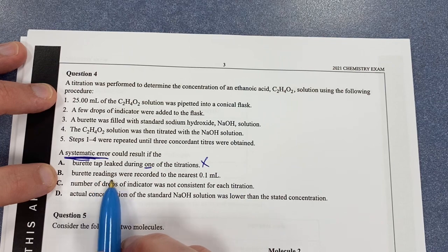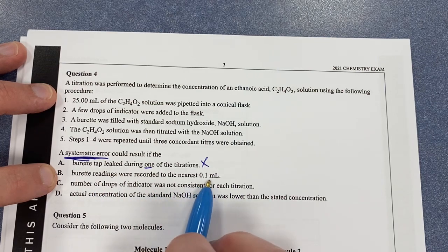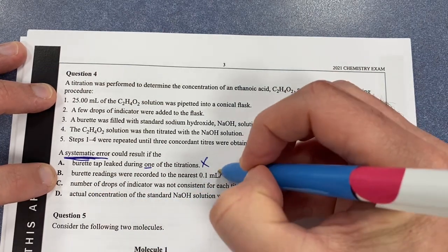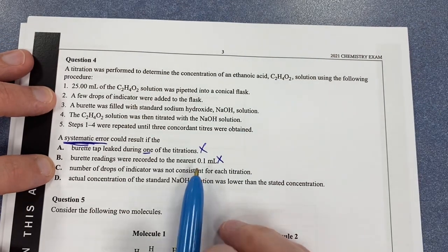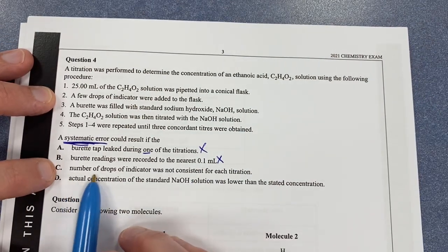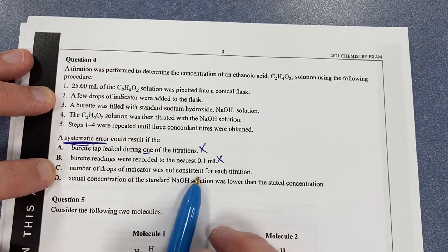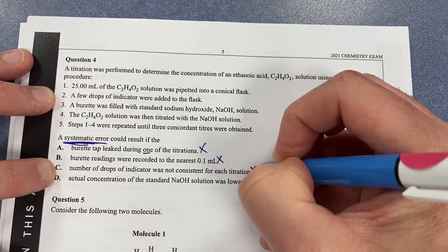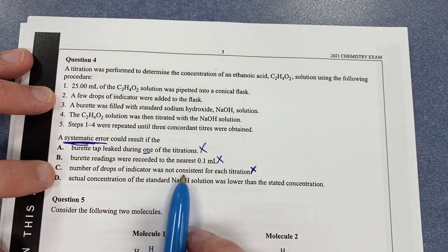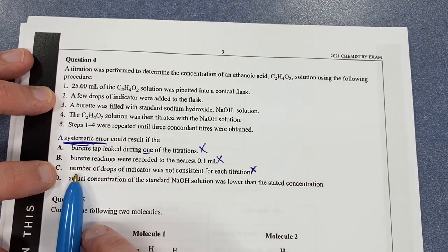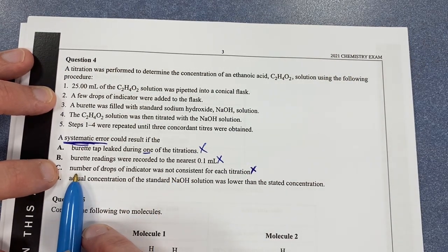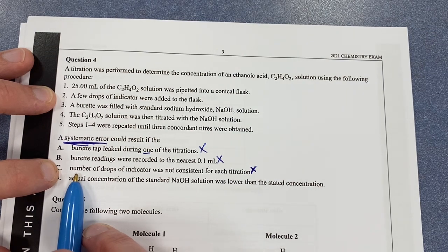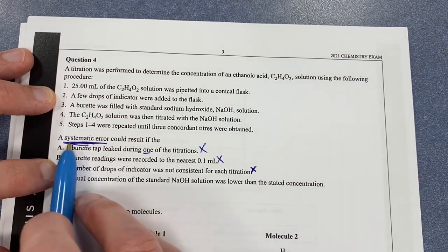The burette readings were recorded to the nearest 0.1 mL - that's not a systematic error. The number of drops of indicator was not consistent for each titration - that's not systematic either because it happens differently. If they added the same for every single trial and it was wrong, that might be systematic. But chances are that's not right.